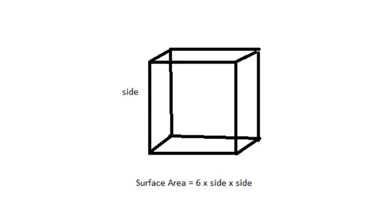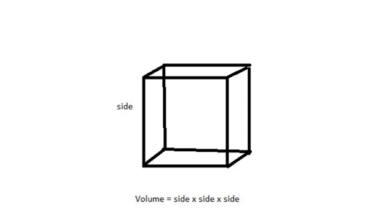The surface area of a cube is six times side times side, or side squared. The volume of a cube is side times side times side, or side cubed.